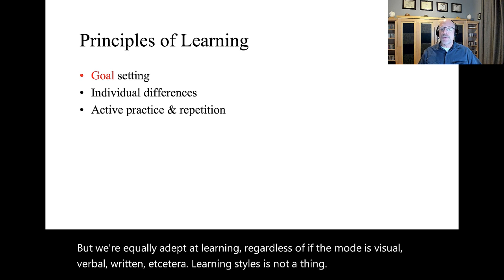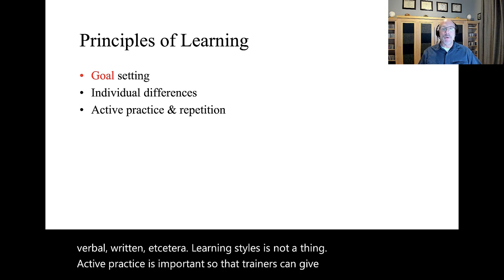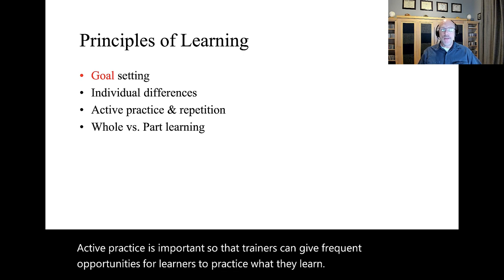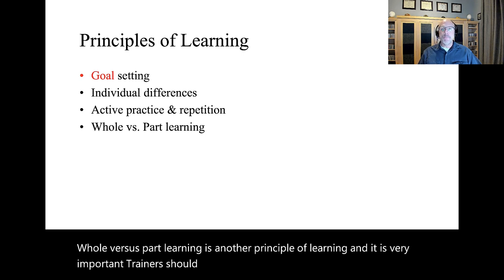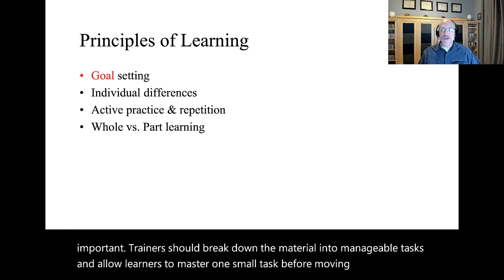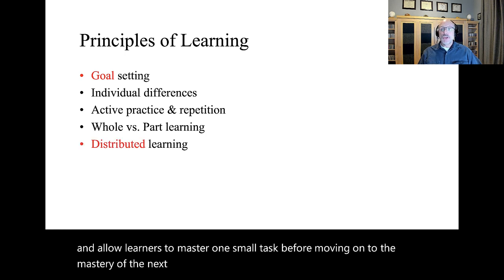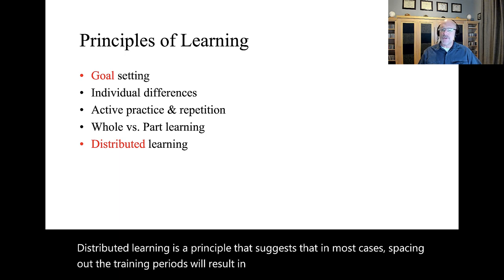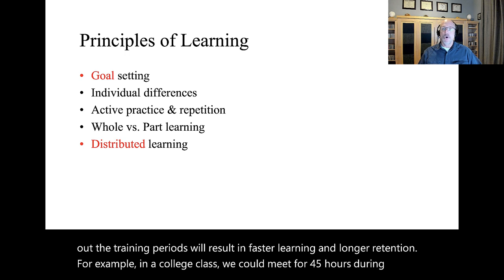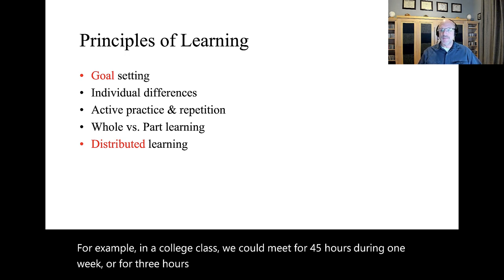Active practice is important so that trainers can give frequent opportunities for learners to practice what they learn. Whole versus part learning is another principle of learning, and it is very important. Trainers should break down the material into manageable tasks and allow learners to master one small task before moving on to the mastery of the next task. Distributed learning is a principle that suggests that in most cases, spacing out the training periods will result in faster learning and longer retention. For example, in a college class, we could meet for 45 hours during one week or for three hours per week for 15 weeks. Clearly, the latter will result in better content mastery.